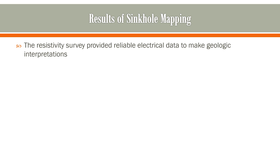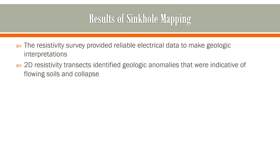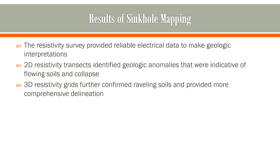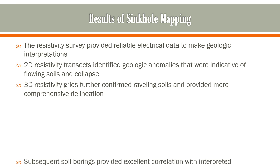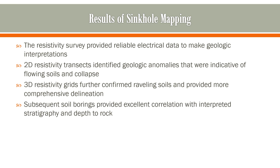In summary, the resistivity data provided reliable information to make geologic interpretations. We identified anomalies that originally we thought were going to be fractures in the rock, but it turned out we were looking at a zone of flowing sandy soils within a clay unit. The three-dimensional analysis further confirmed the exact size, shape, and location of those flowing soils — a very good application of electrical resistivity in a karst environment to delineate flowing and collapsing soils that resulted in a visible collapse feature at the ground surface.